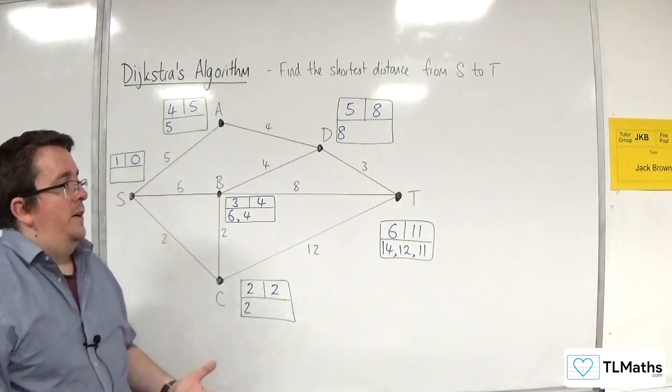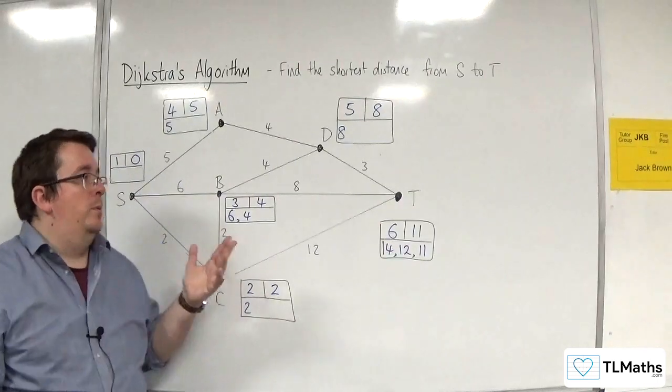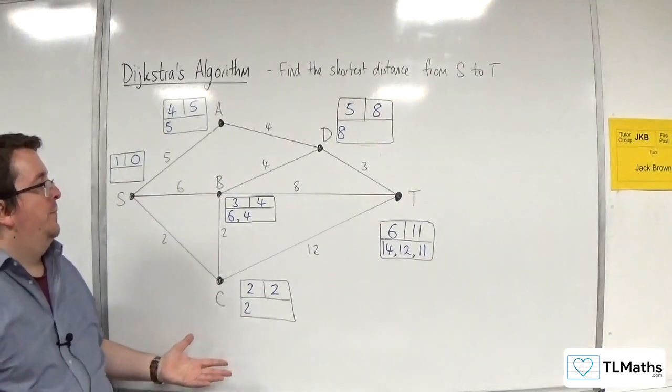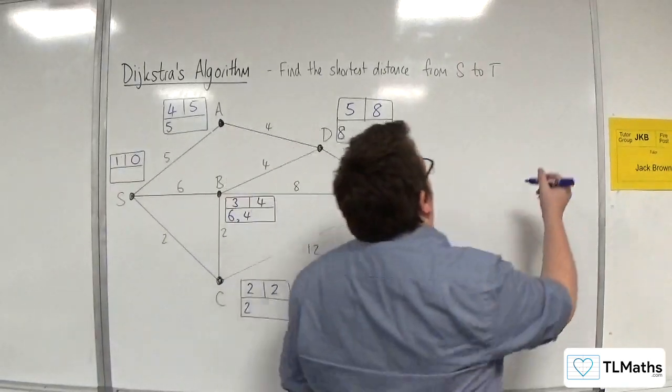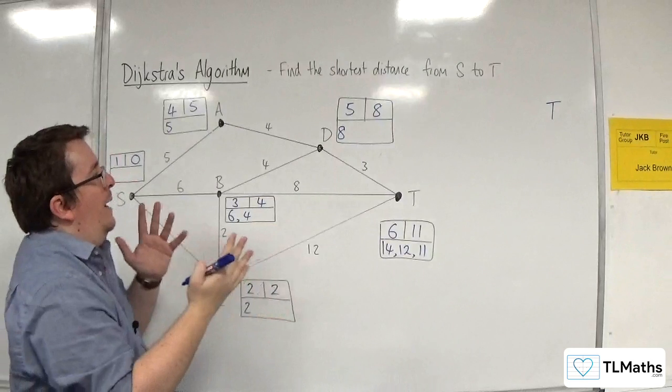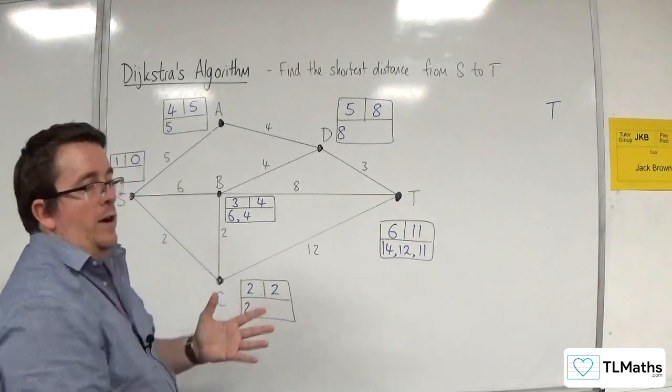Now, we might get asked to actually find the route. What would be the route that gives you that shortest distance? So the easiest way to look at it is to start from the end point, so at T, and work your way backwards.